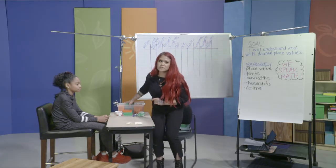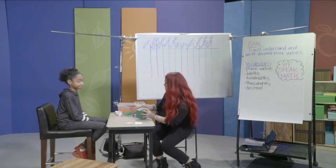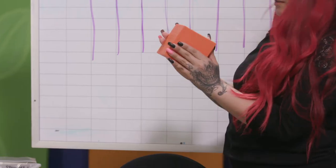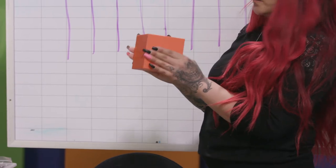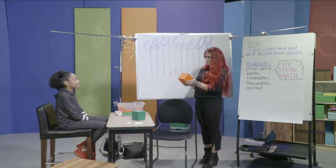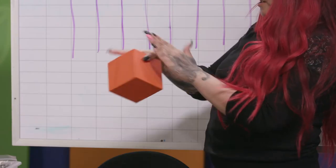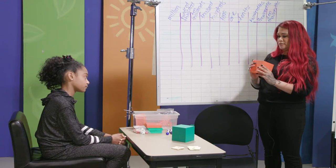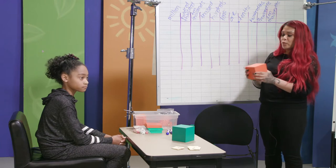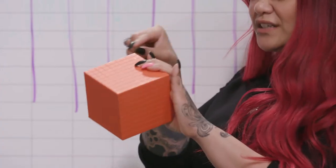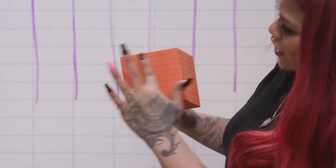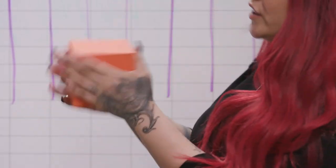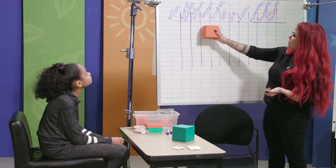Now we're going to look at the blocks that represent each place value. Ajene, what do you know about this big cube? She said on every side it's a hundred. So this side is a hundred, hundred, hundred — this big cube has a thousand little cubes. If you look closely, there's a hundred on each face, and the whole cube holds a thousand tiny cubic units. So this actually represents thousands — we would put it in the thousands place.